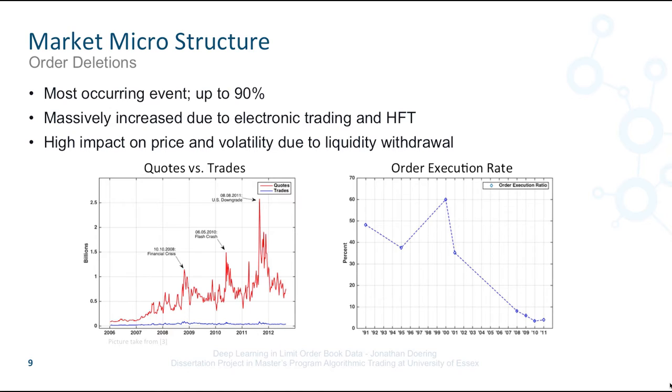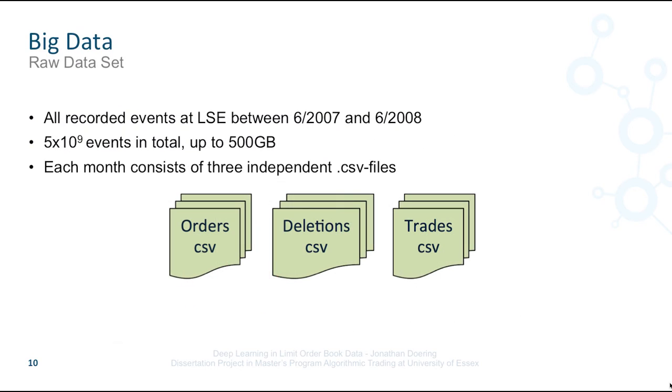The reasons for that are many-fold. However, one of the main causations can be seen in the development into fast electronic markets and high-frequency trading. Astonishing enough, deletions are rarely used as an information source. Furthermore, recent research shows that deletions have a high impact on volatility and price due to liquidity withdrawal and thus inducing imbalances on the bid, respectively, ask side of the order book.